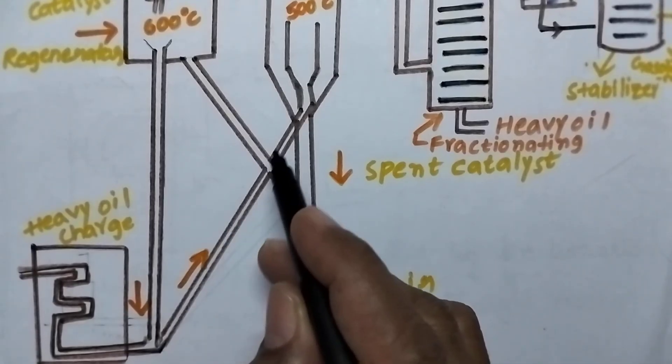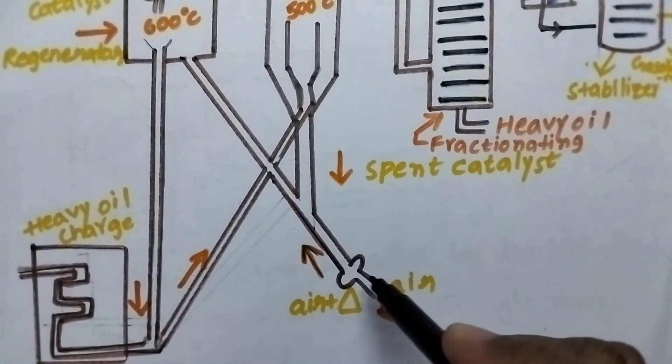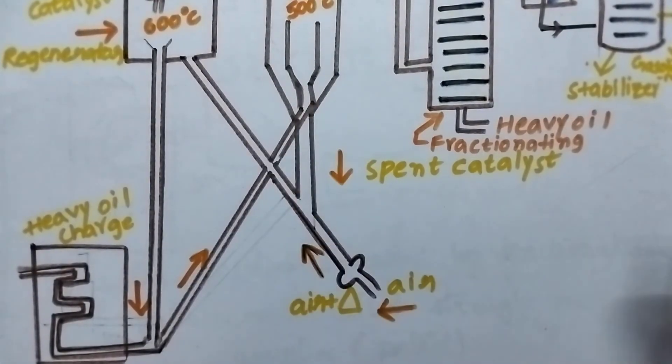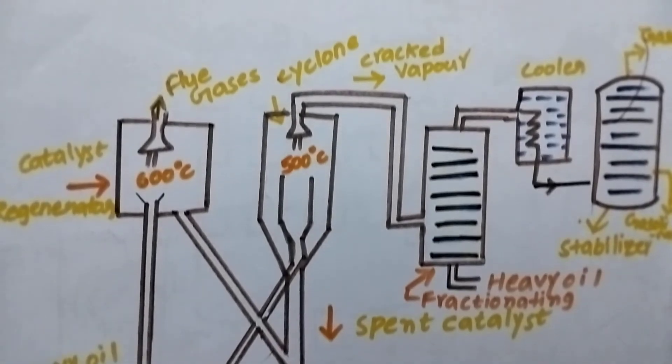These vapors are passed into the reactor with the help of air. At the reactor, the complete cracking of the heavy oil takes place.